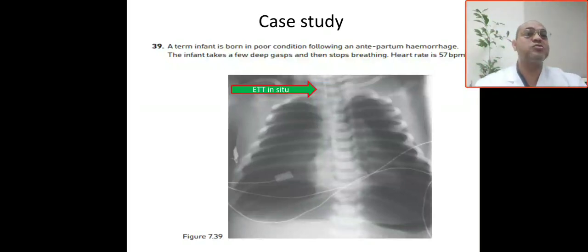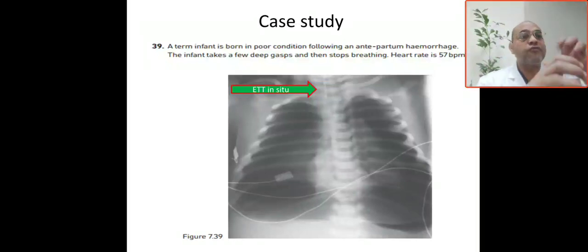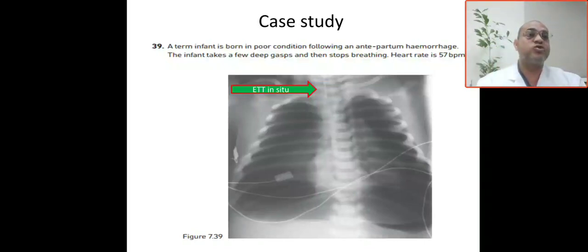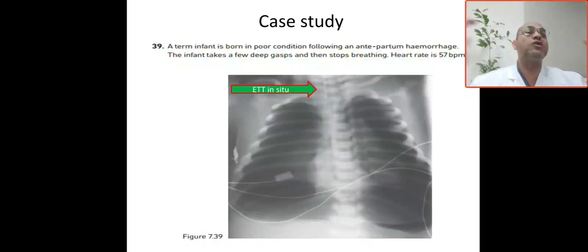There are two reasons: either the pneumothorax is from the gasping respiration, or from positive pressure ventilation commenced immediately because the baby is gasping with heart rate below 60. This explains the pneumothorax. Transillumination shows no difference because all signs are equal on both sides, making bilateral pneumothorax very difficult to diagnose.